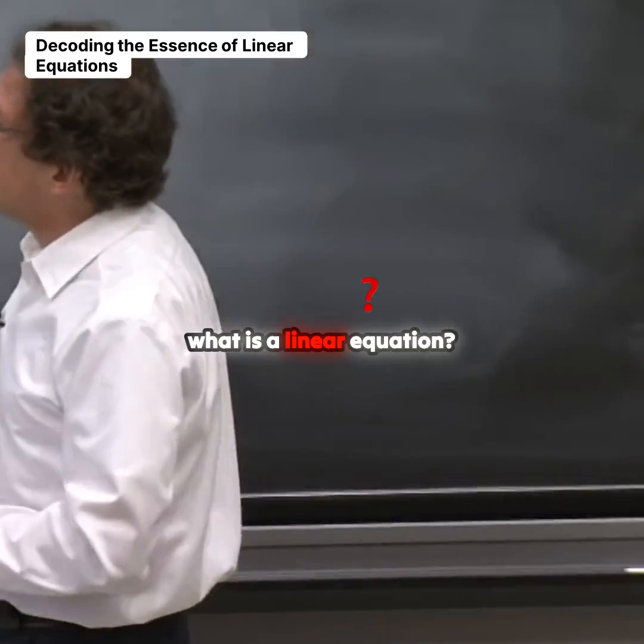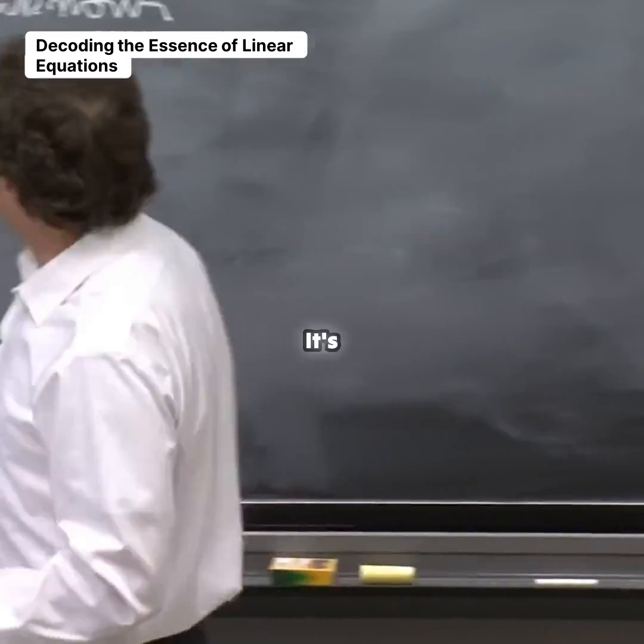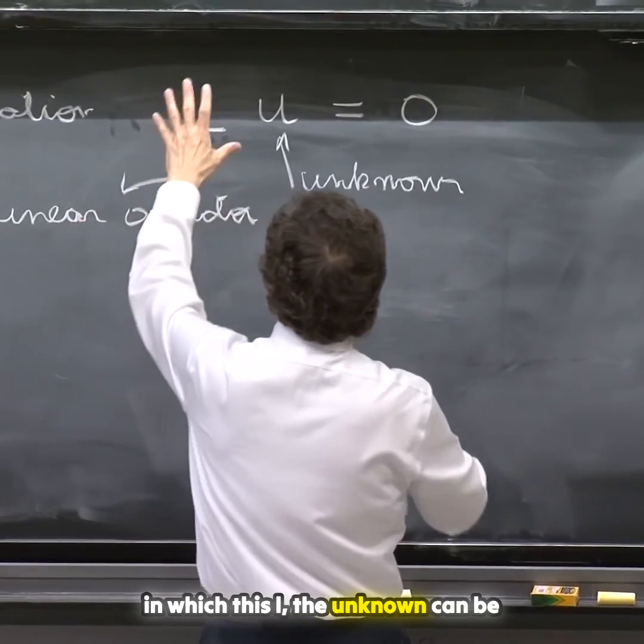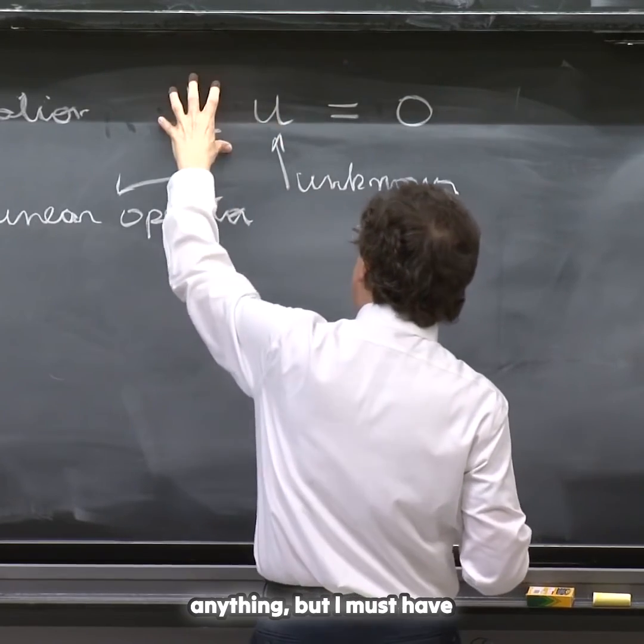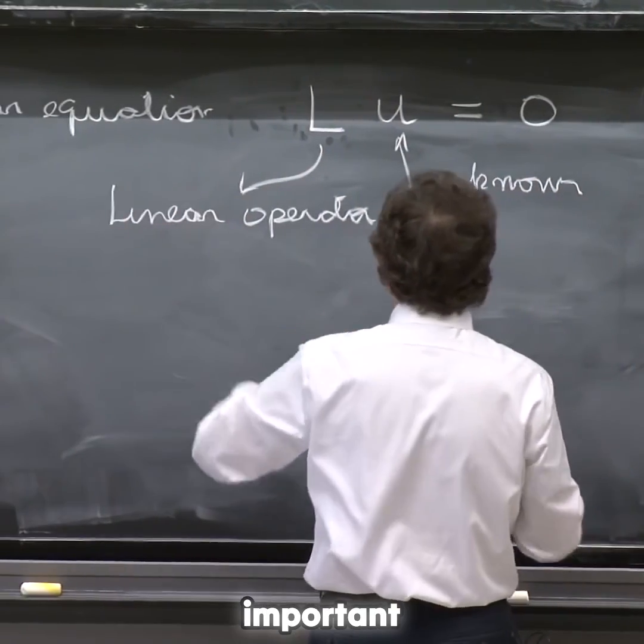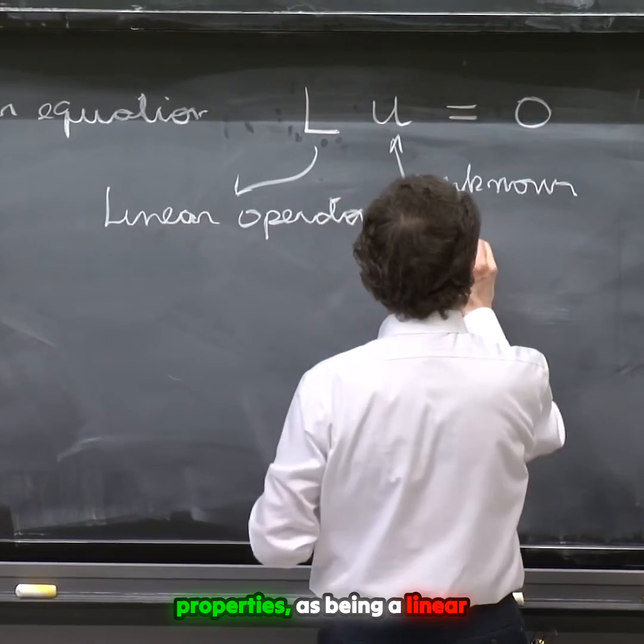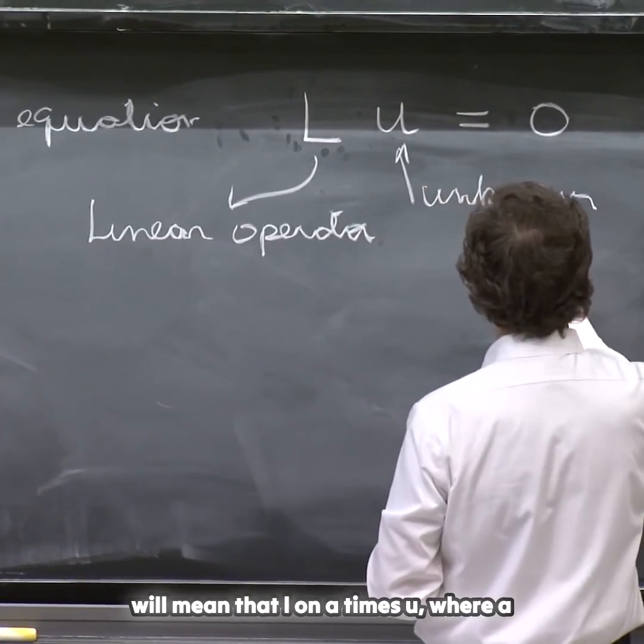So what is a linear equation? It's something in which this L, the unknown, can be anything, but L must have important properties as being a linear operator will mean that L